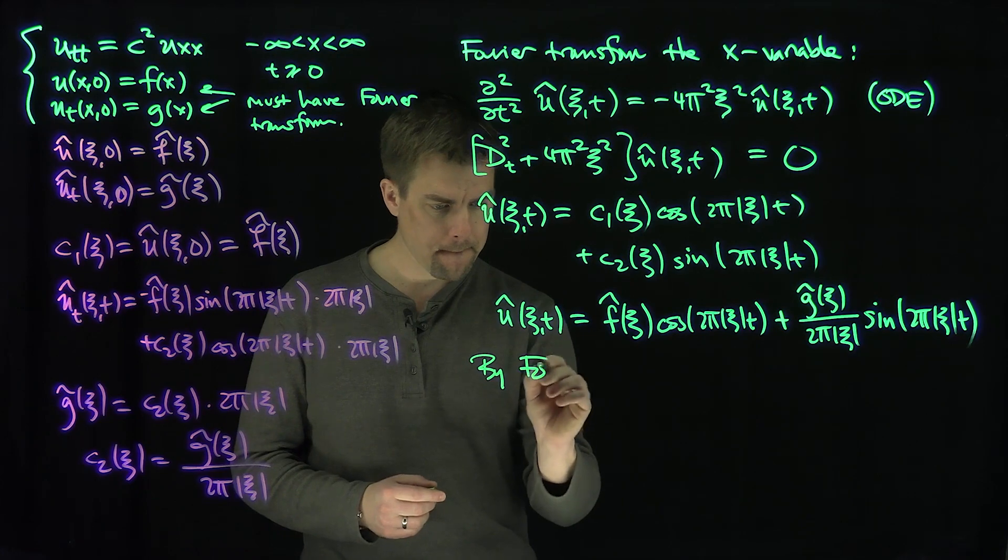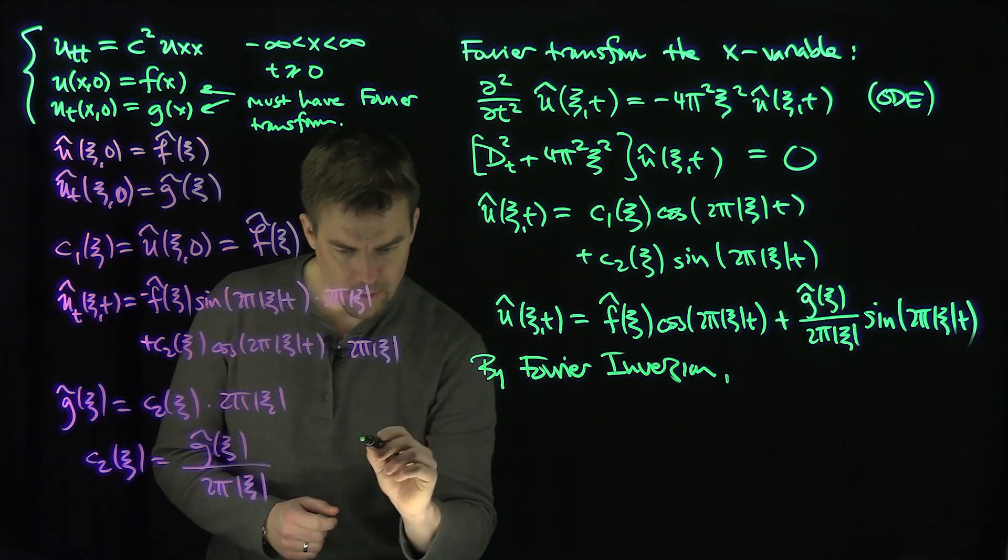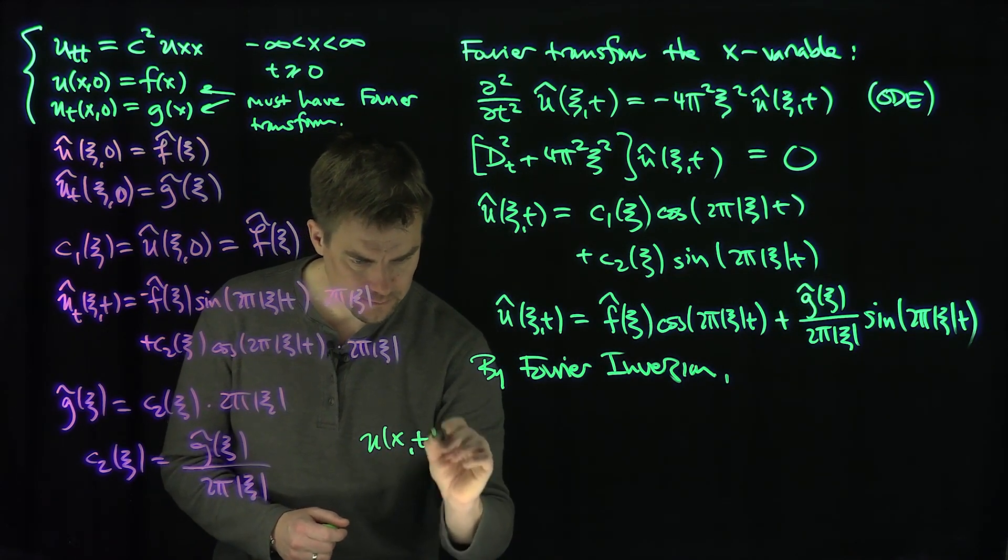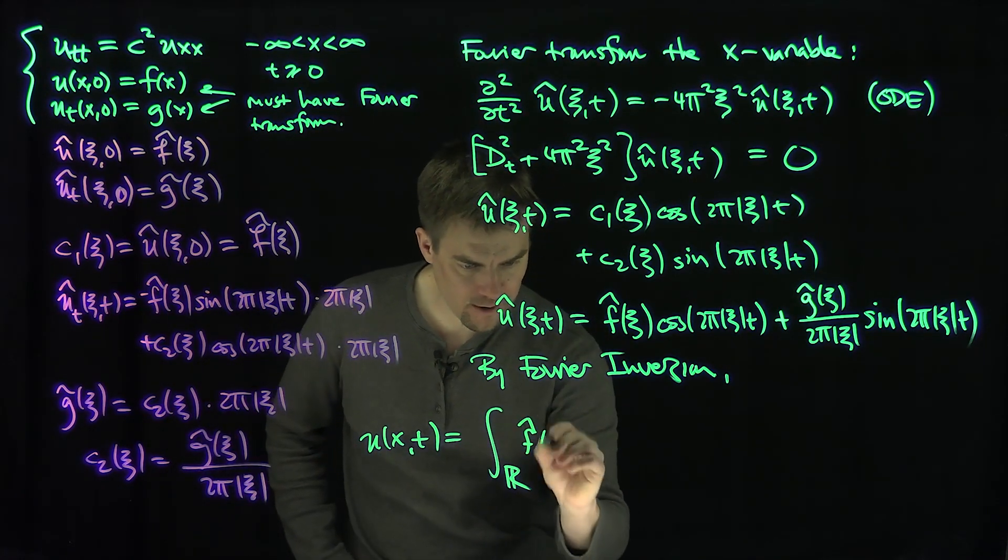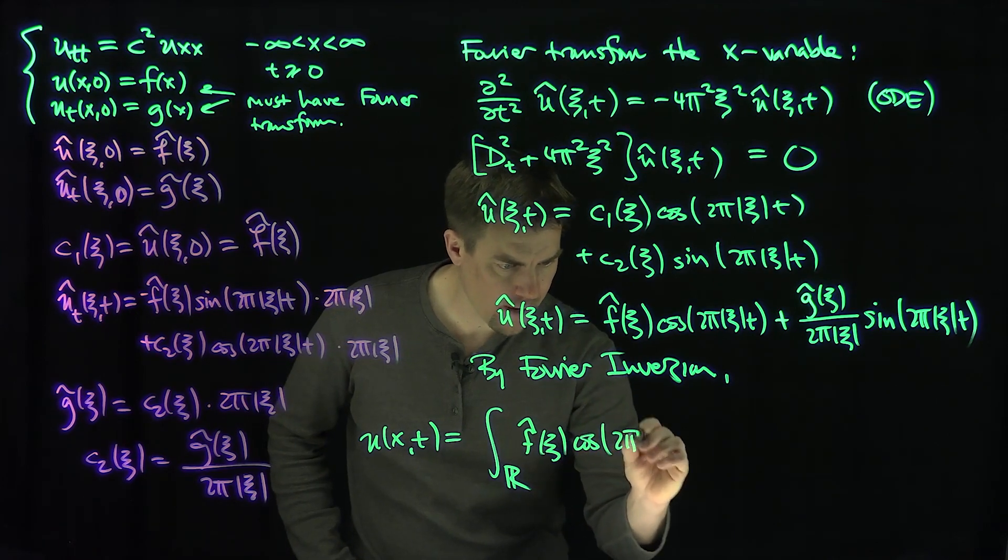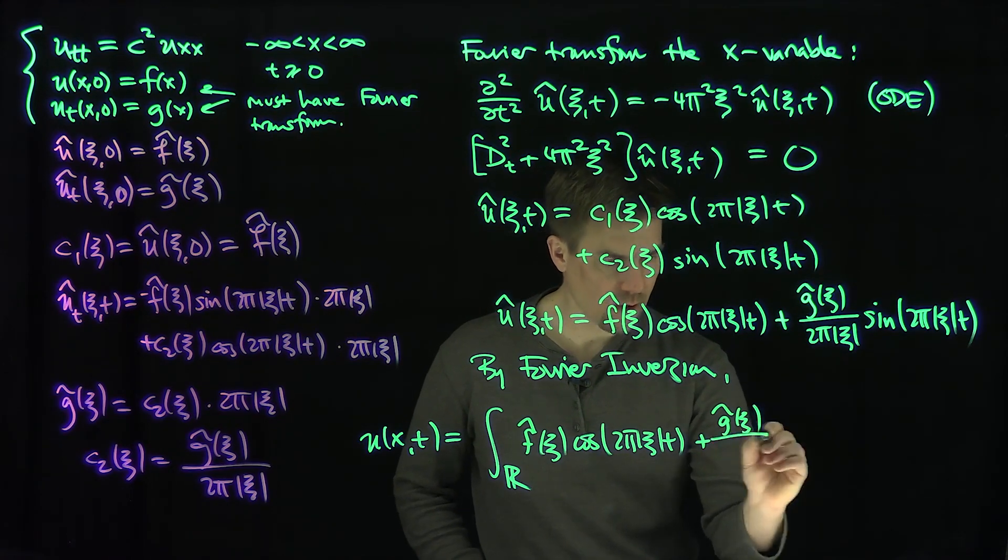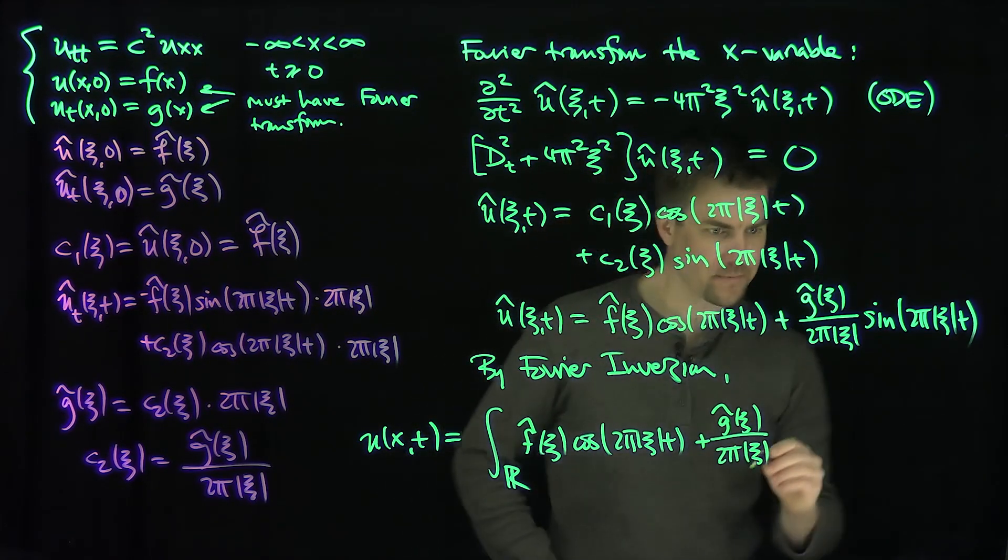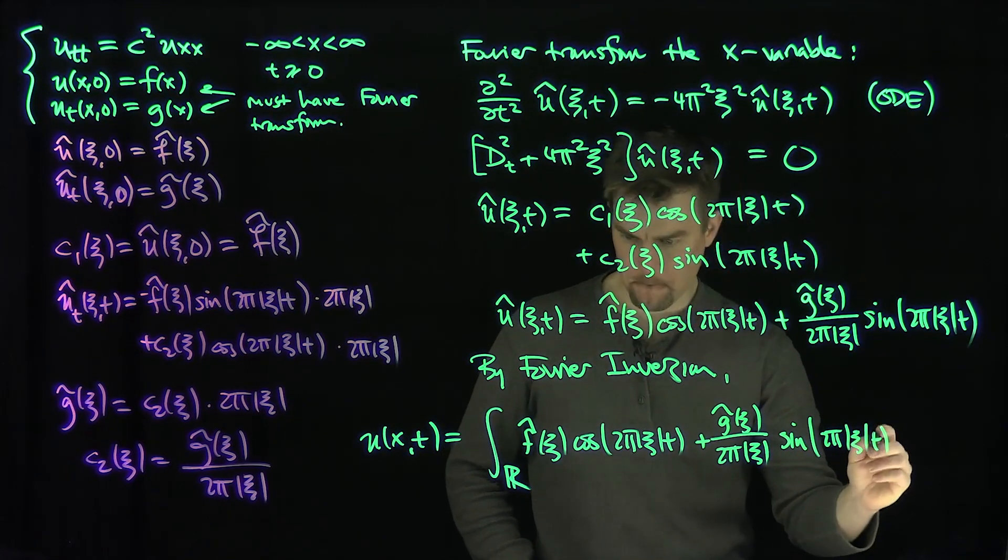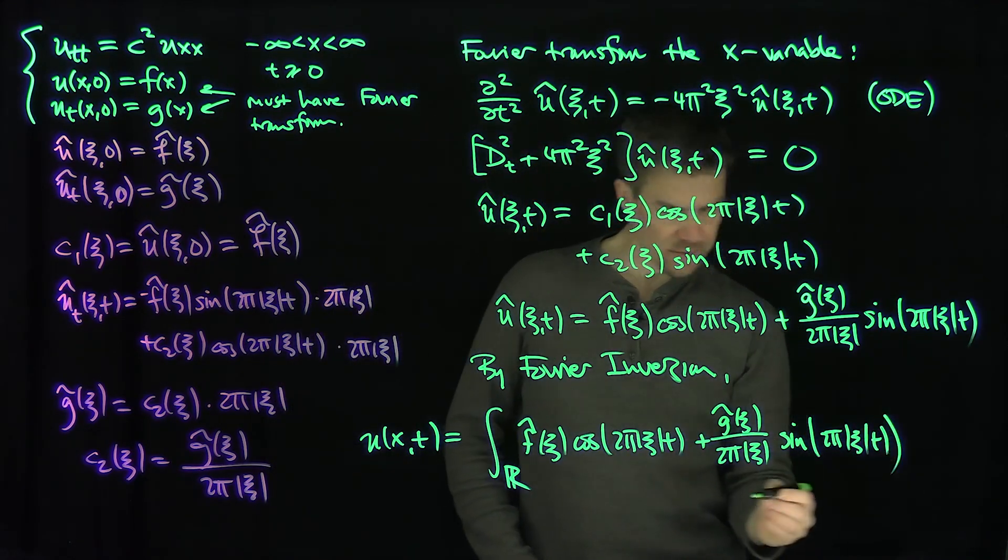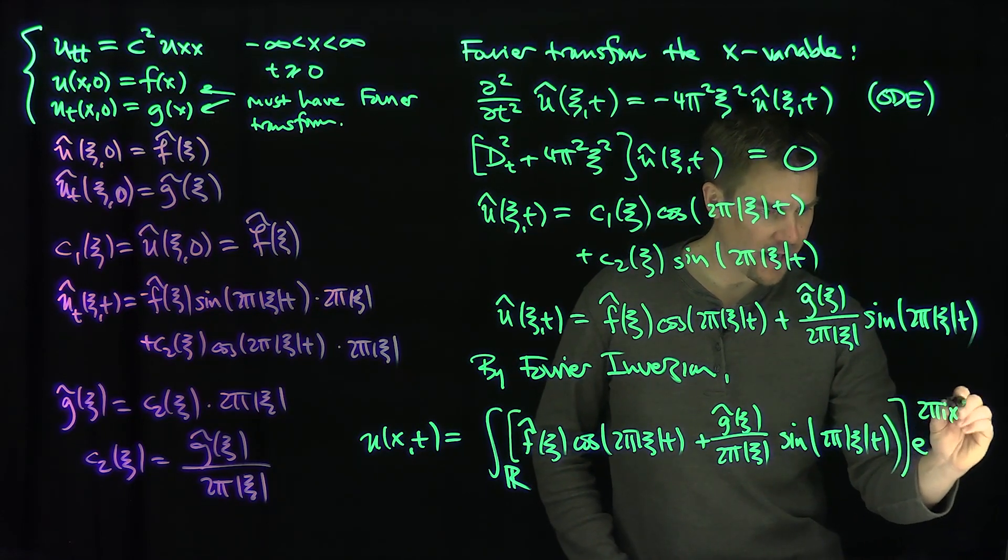For the time I'm just going to use straight Fourier inversion. So by Fourier inversion, my u of x and t is going to be the integral over R of this function over here. So this is going to be f hat of xc cosine 2 pi xc t plus g hat xc over 2 pi xc sine 2 pi modulus xc t.